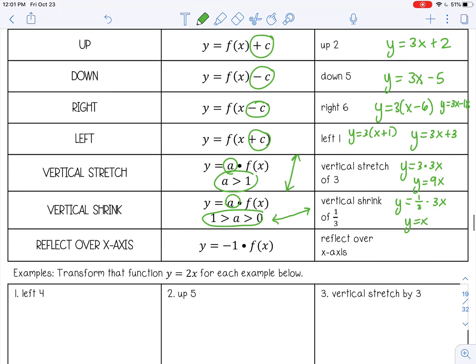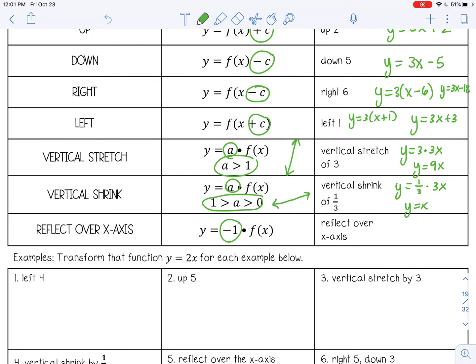And then to reflect it across the x-axis, you multiply by negative one. So negative one times 3x would be negative 3x. And what that does is it makes your slope negative. So the line will now fall from left to right.